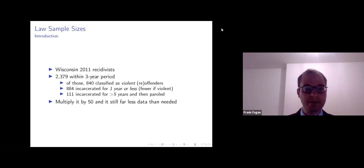And they found that within a three-year period, there were only 2,379 that recidivated. And of those, if you start thinking about some of these labels, only 840 were classified as violent. 884 were incarcerated for a year or less. And only 111 were incarcerated for greater than five years and then paroled. So it's easy to see that this is not enough data to achieve even the 5,000 labeled examples that one would need.